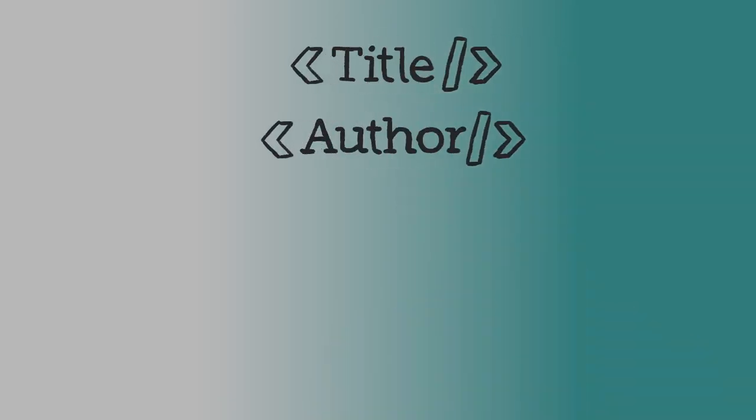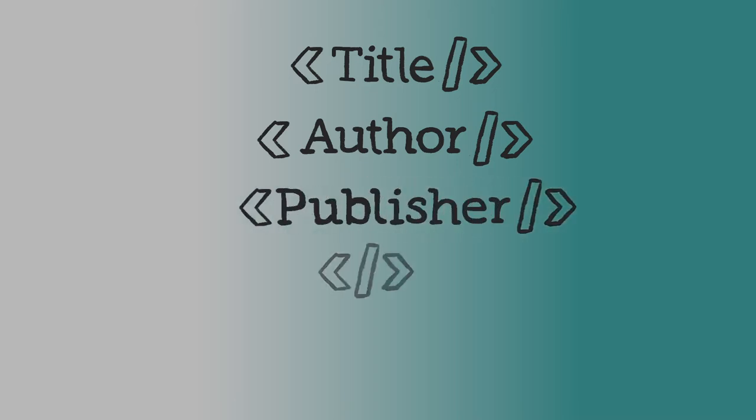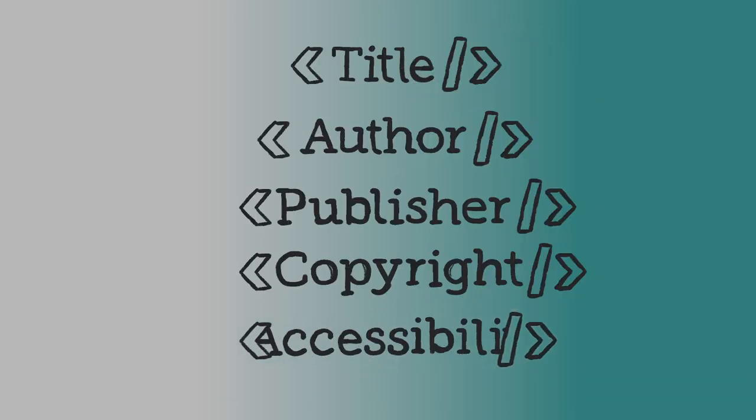In the publishing arena, metadata is a very important piece, not only of the distribution network, but also of the accessibility arena. So things like the title of the book, the author, the publisher, and the copyright date are all included in special classes of metadata.